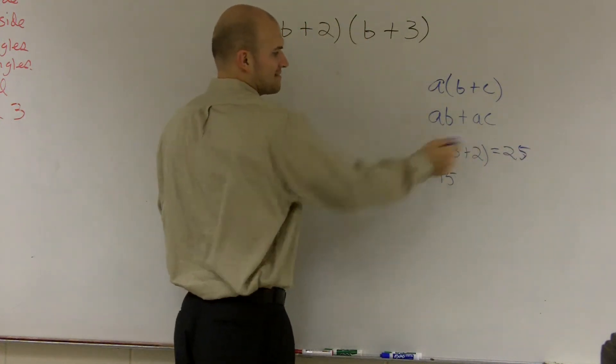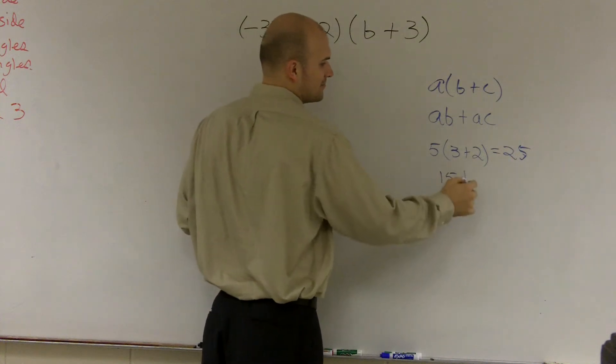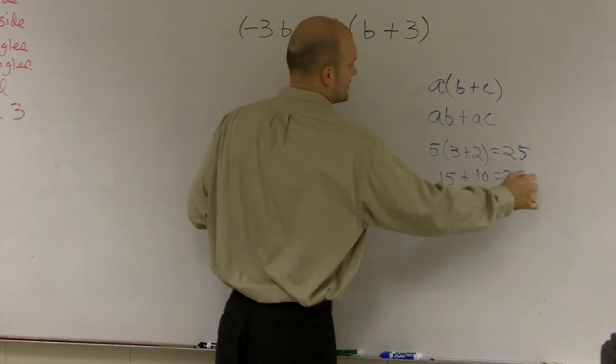3 plus 2 is 5, 5 times 5 is 25. 5 times 3 is 15 plus 5 times 2 is 10, which equals 25.